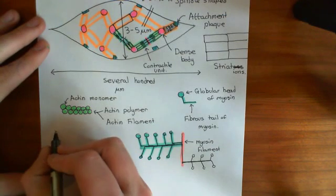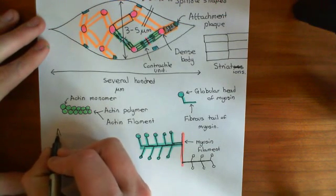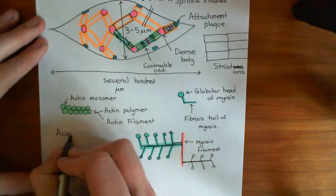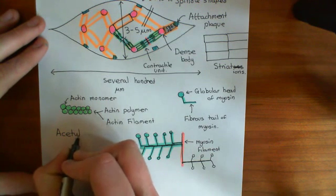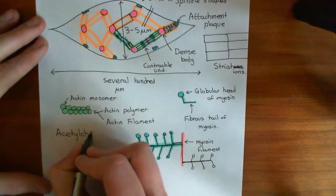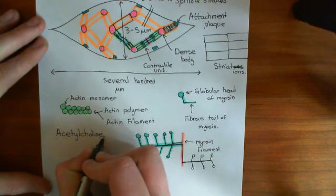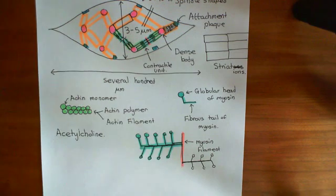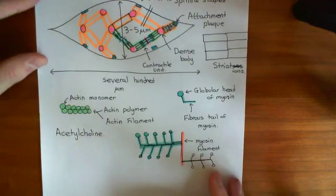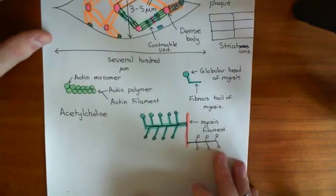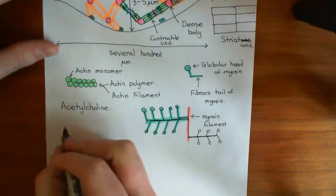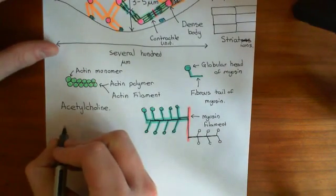Let's have a look at the structure of acetylcholine and then we'll look at what it's going to do to the smooth muscle cell. Acetylcholine is basically acetic acid esterified with choline. Let me show you its structure.